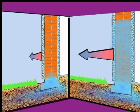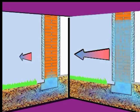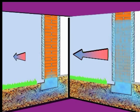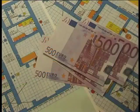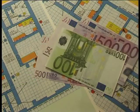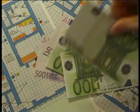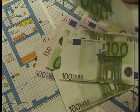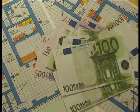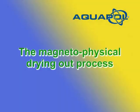As wet masonry permits heat to flow out more easily than dry masonry, the heat insulation of the building worsens. This means much higher heating costs in the winter.